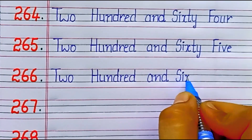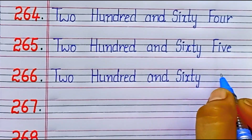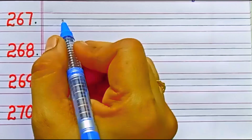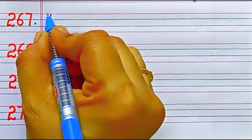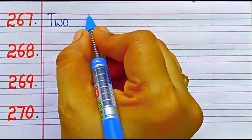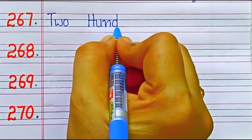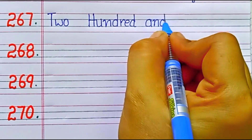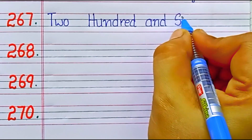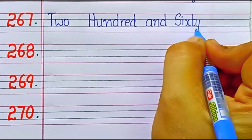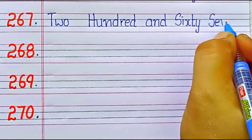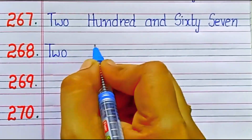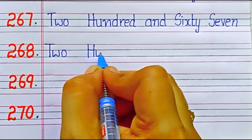Two hundred and sixty seven. S-I-X-T-Y S-E-V-E-N. 67. Two hundred and sixty eight. S-I-X-T-Y E-I-G-H-T. 68.